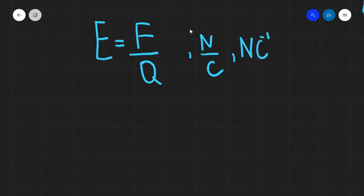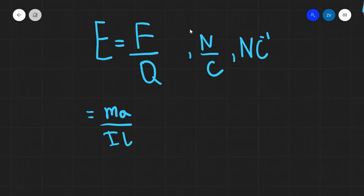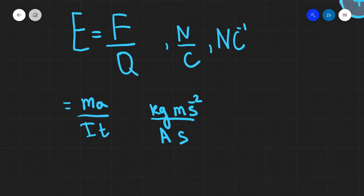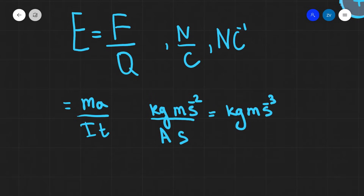Let's work out the base unit for electric field strength. We know force F = ma and charge Q = It. The unit for mass is kilograms, acceleration is m·s⁻², and we divide by current times time (A·s). This gives base units of kg·m·s⁻² divided by A·s, which simplifies to kg·m·s⁻³·A⁻¹.